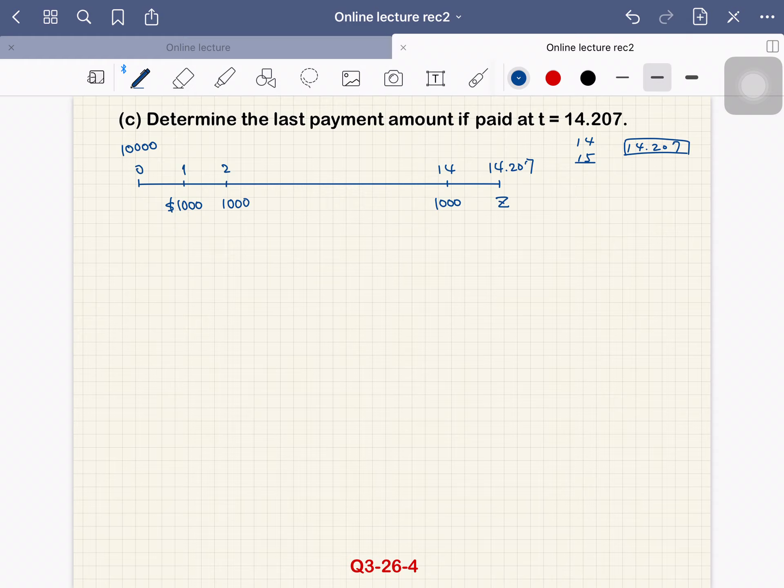So what is Z? Again, we think about the present value on both sides. $10,000 is the present value, and the payments are $1,000 fourteen times plus present value of Z. Present value of Z is 1.05 to the power negative 14.207 times Z.